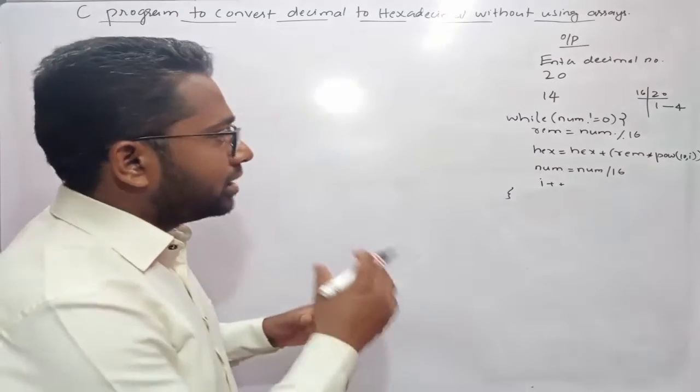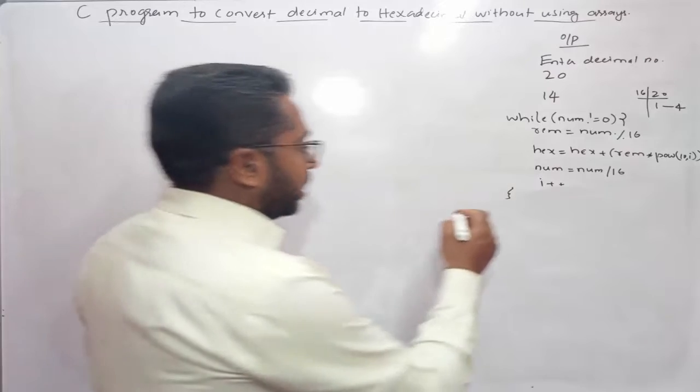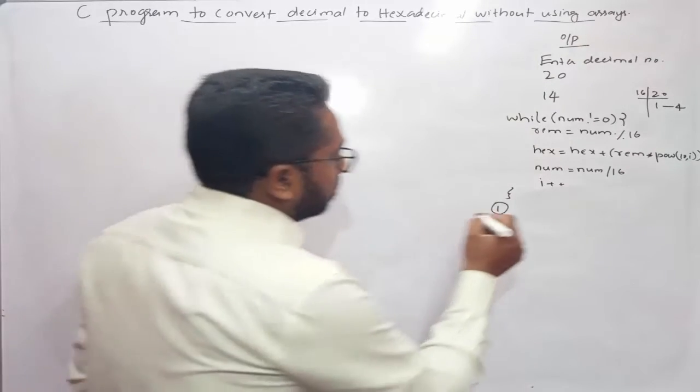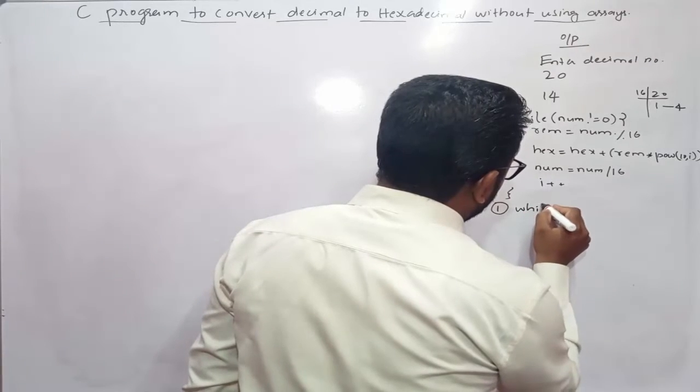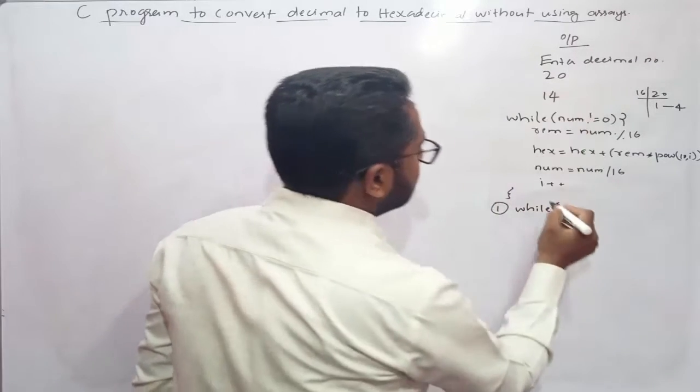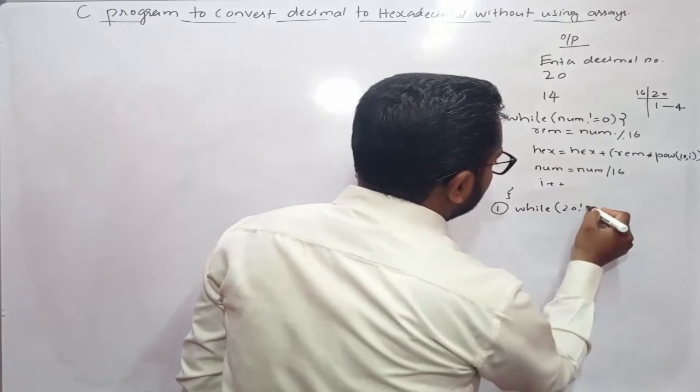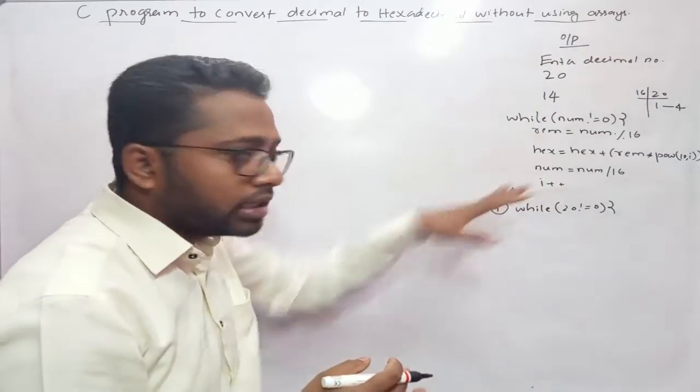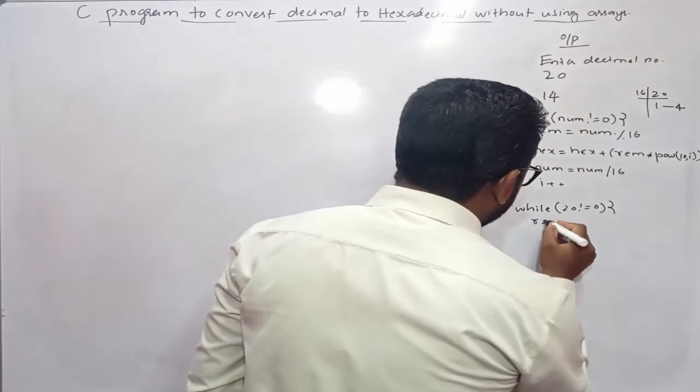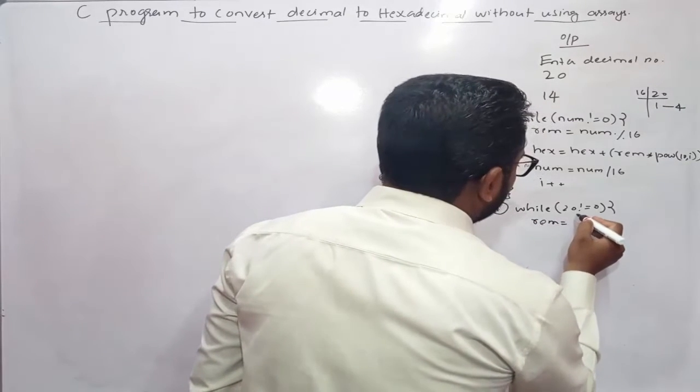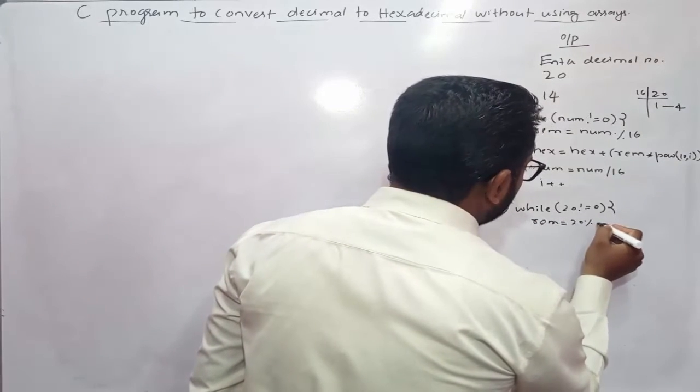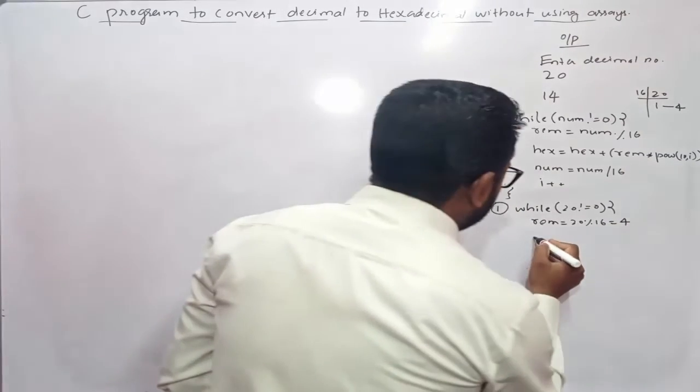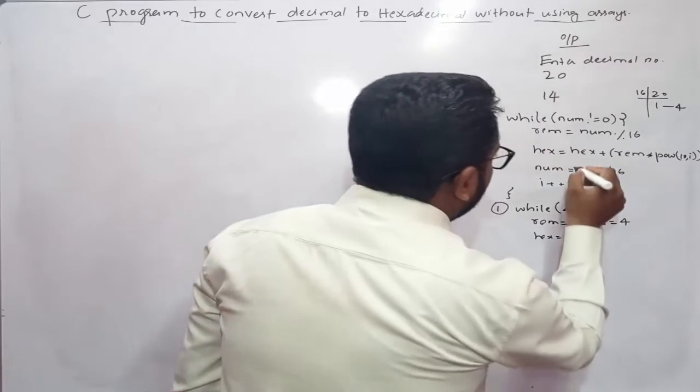Now let us trace this program. Let's see the first iteration. While num, num is 20, 20 is not equal to 0, condition satisfied. When the condition is satisfied, control will come inside the while loop to find the remainder. Remainder equals num which is 20 mod 16, and we get 4 as the remainder.